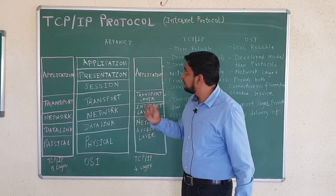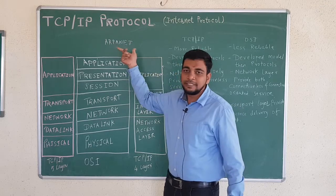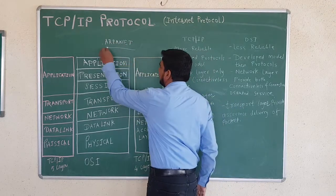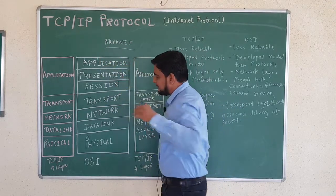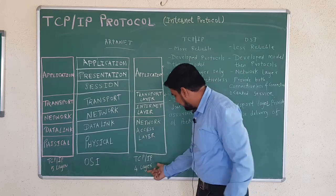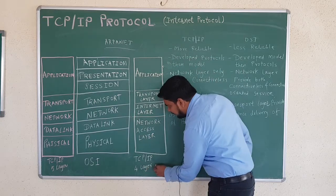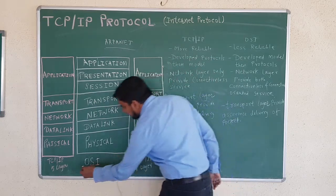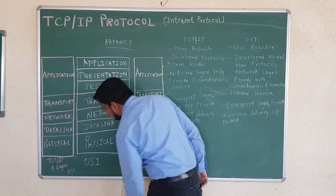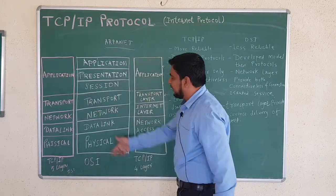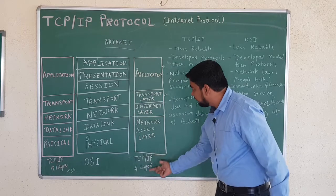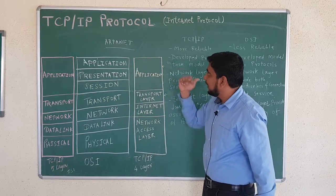Who has developed this TCP/IP model? It is developed by ARPANET. The TCP/IP model is developed by ARPANET, and the OSI model is developed by ISO. The 5-layer architecture is developed by ISO and the 4-layer architecture is developed by ARPANET.